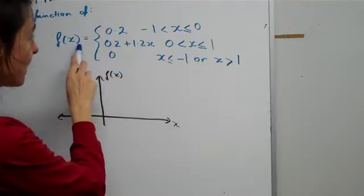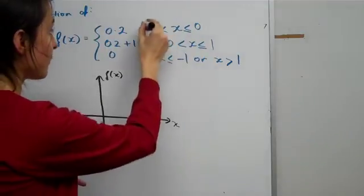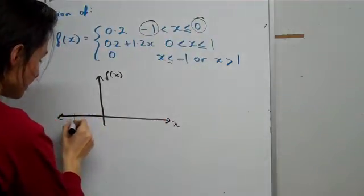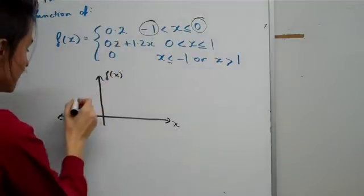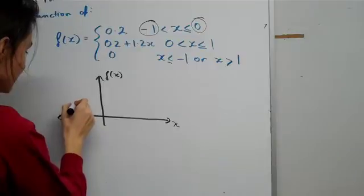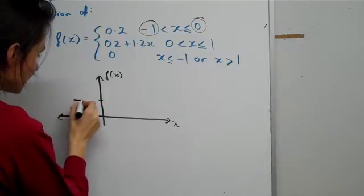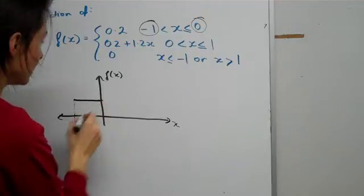This tells us that the y value is equal to 0.2 between an x value of -1 and an x value of 0. So when we go to -1 and 0, our y has to always be 0.2. Let's just draw 0.2 to be here and this horizontal line here is always going to be 0.2.